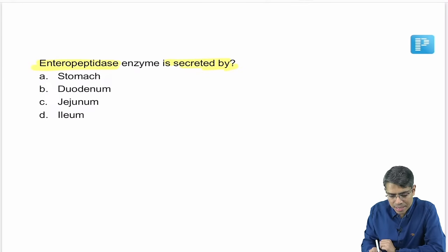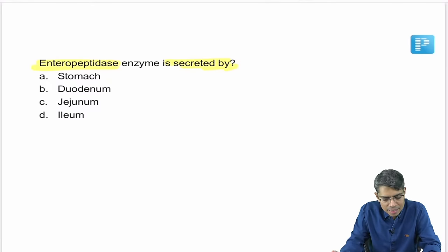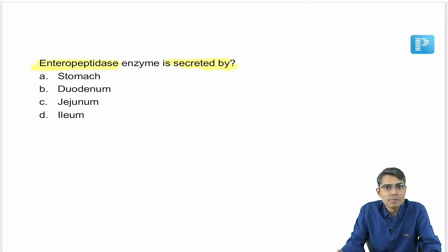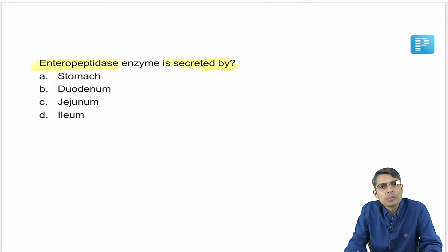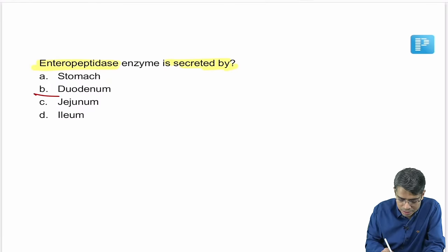Next question: enteropeptidase enzyme is secreted by? It is not secreted per se — it is a brush border enzyme present at the level of duodenal mucosa. The answer is duodenum. Enteropeptidase enzyme is present in the duodenum and converts trypsinogen to trypsin.